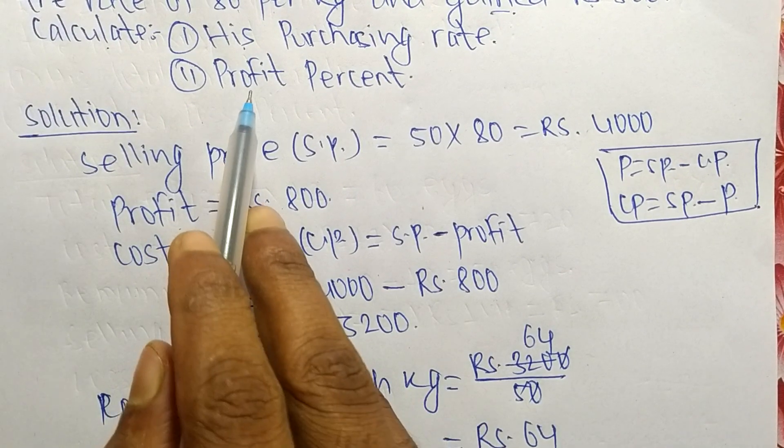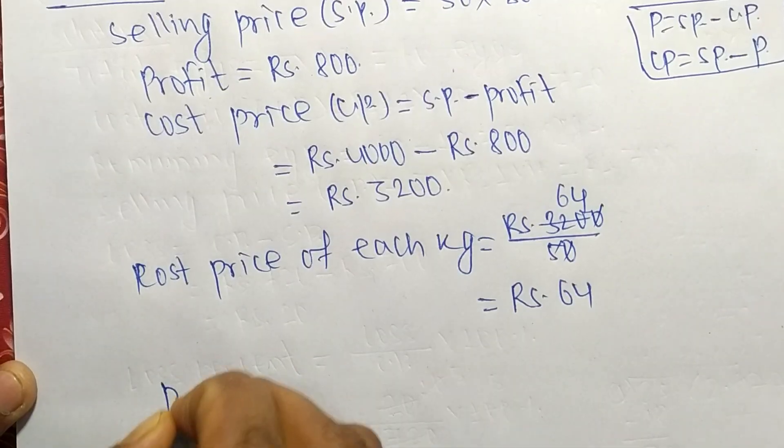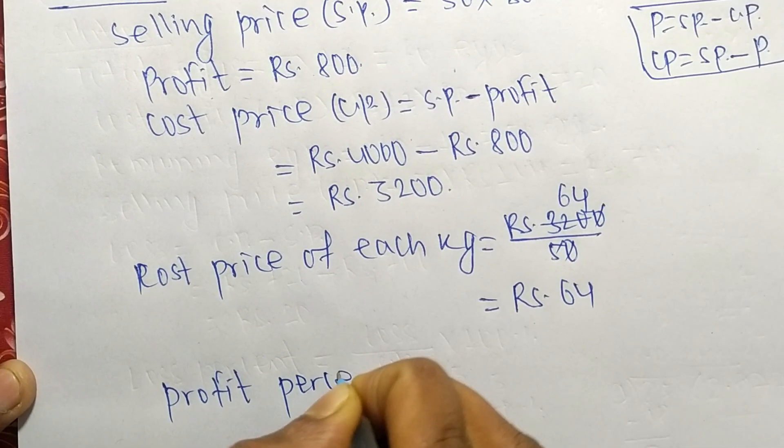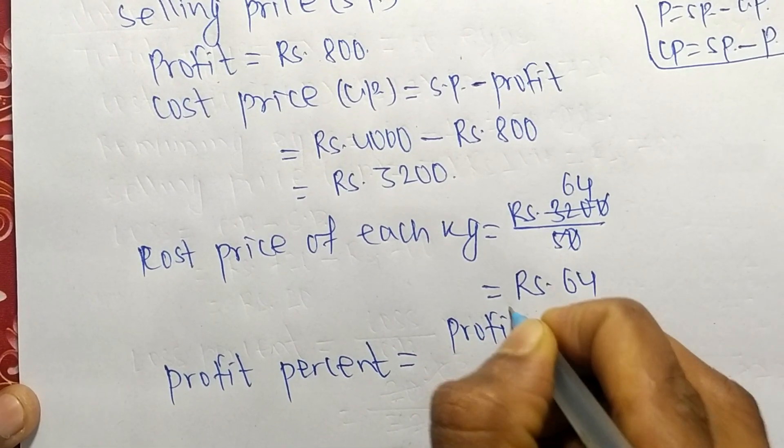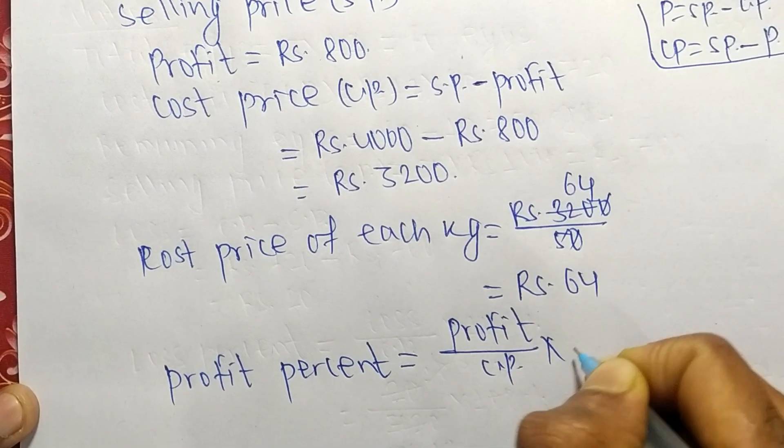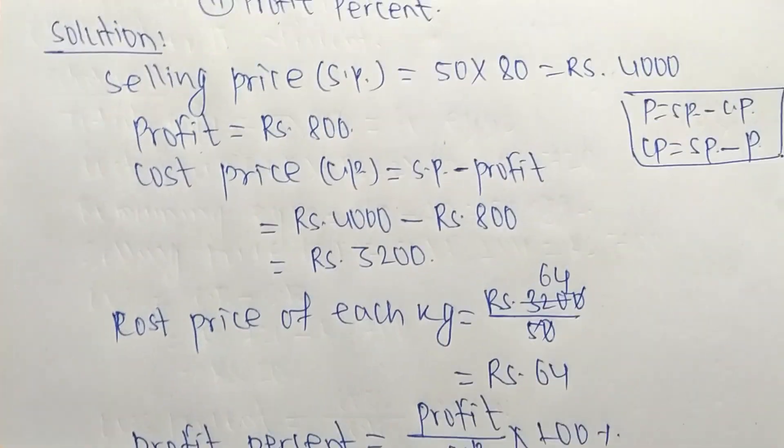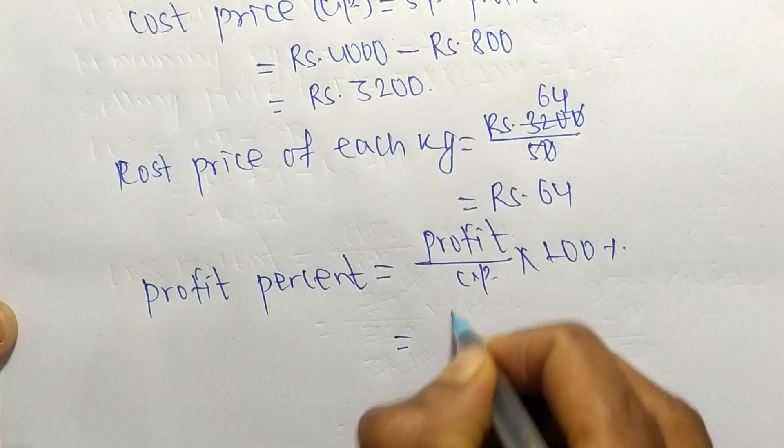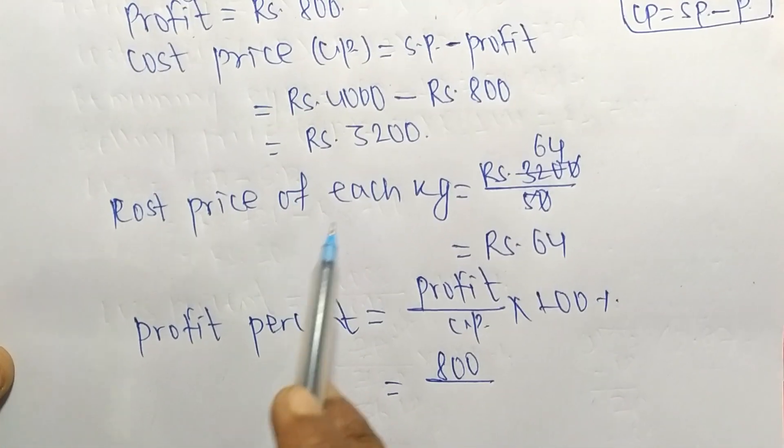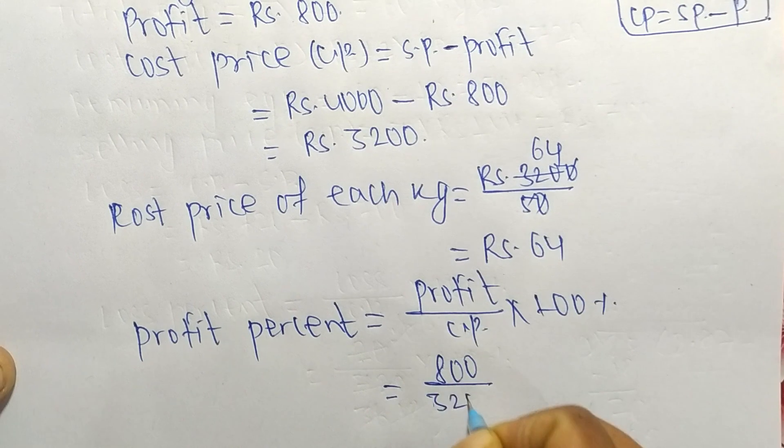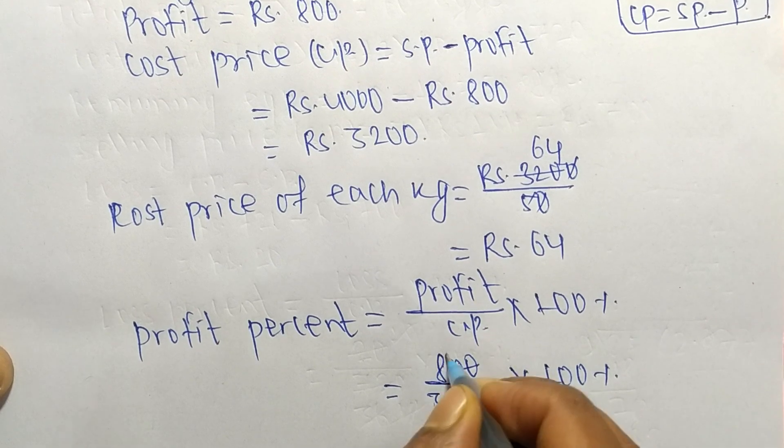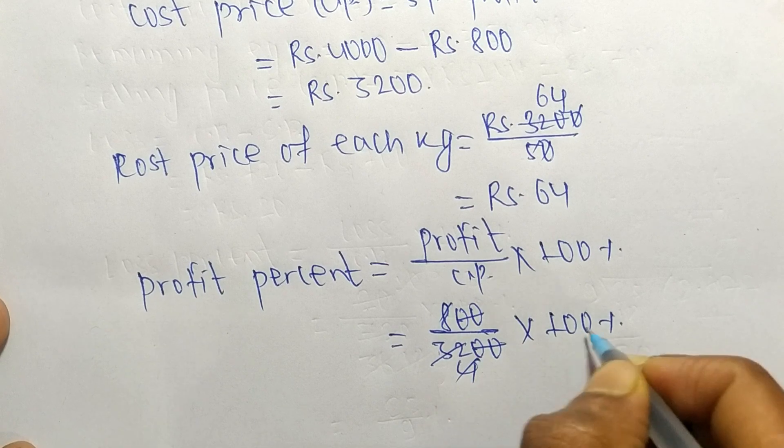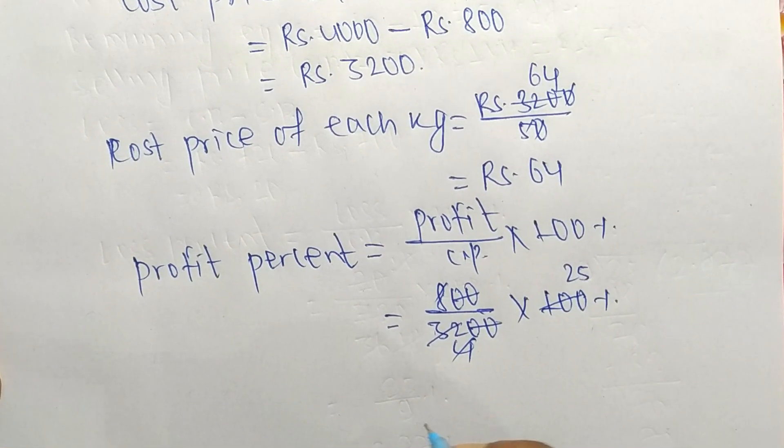Now we have to calculate profit percent. Profit percent is equal to profit by CP into 100 percent. Total profit is Rs. 800, so it is 800 by cost price which is 3200, times 100 percent. 8 times 4 is 32, and 4 divides 100 we get 25. So the total profit percentage is 25 percent.